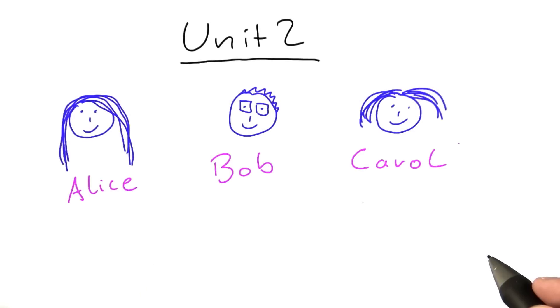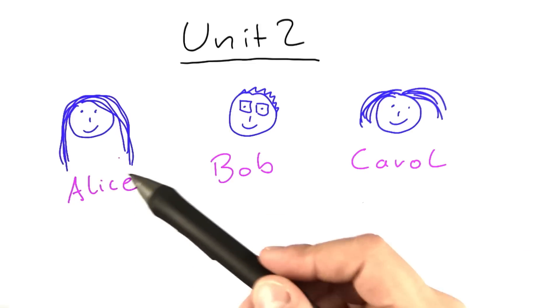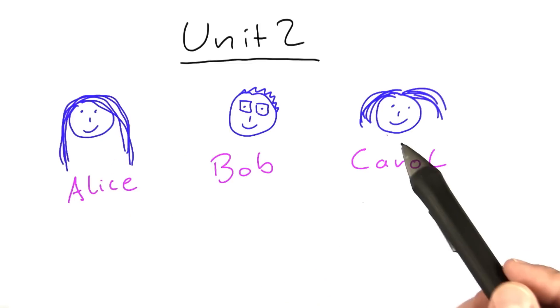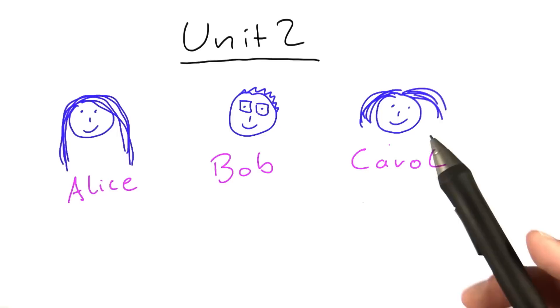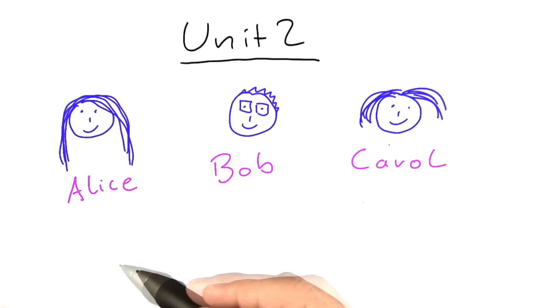So welcome to unit two. In the last unit, we encountered three computer scientists, as I hope you'll remember: Alice, Bob, and Carol. And as you recall, they all three were working on rather tough problems for which they weren't able to find an efficient algorithm.